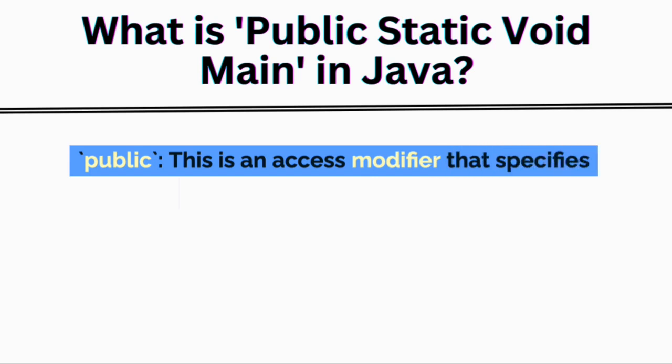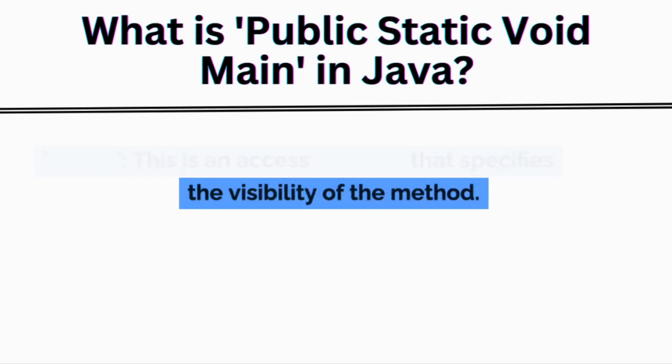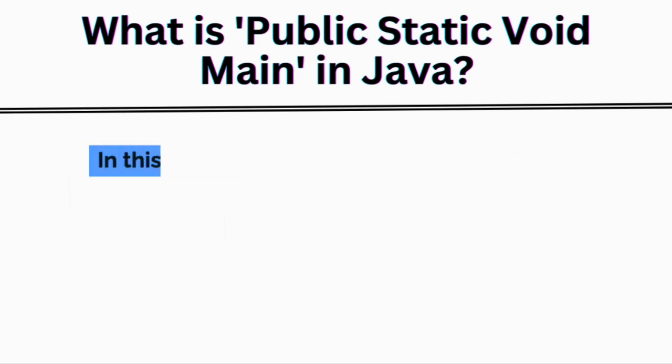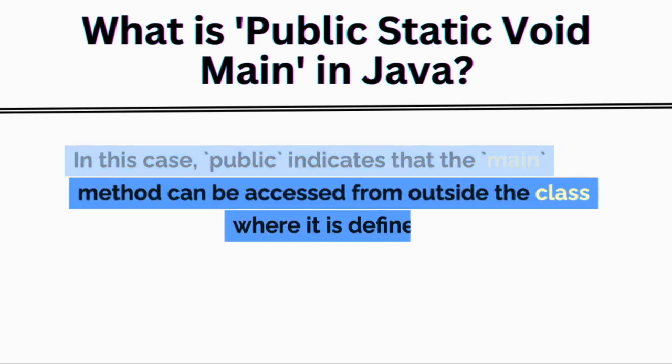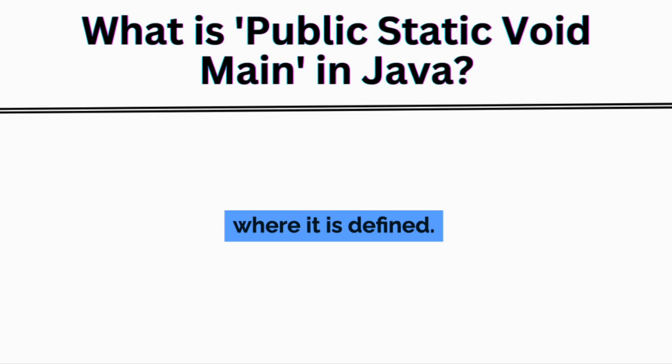This is an access modifier that specifies the visibility of the method. In this case, public indicates that the main method can be accessed from outside the class where it is defined.